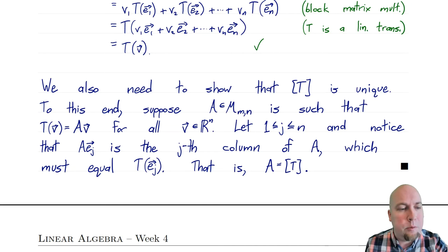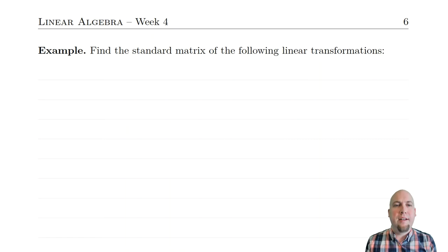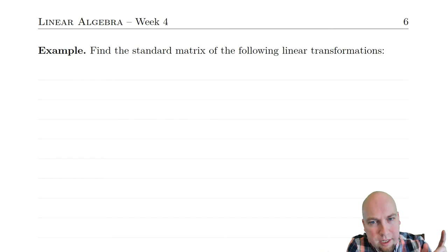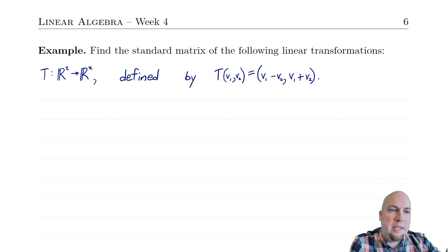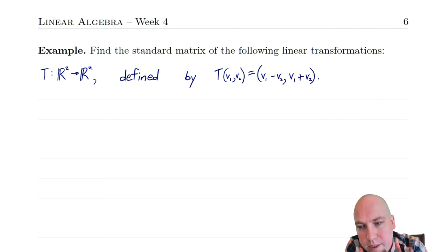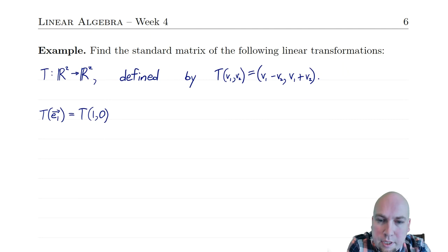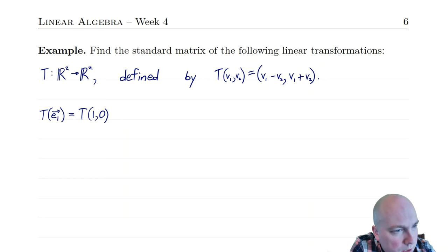Let's run through a couple of examples of finding the standard matrix of a linear transformation to pin down our intuition. So to start, here's a linear transformation on two-dimensional space: T sends (V1, V2) to (V1 minus V2, V1 plus V2). How do we find the standard matrix? First, compute T of E1. Well, E1 is just the vector (1, 0) because we're in two-dimensional space. Plugging in, we get 1 minus 0, 1 plus 0 — so T of E1 equals (1, 1).